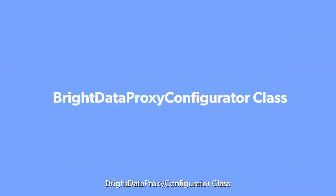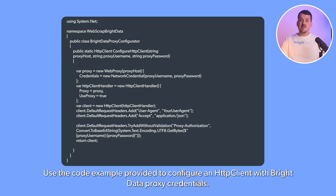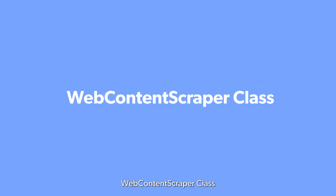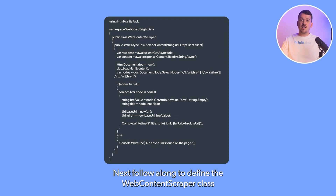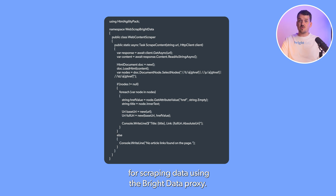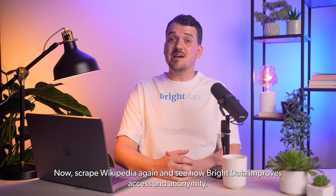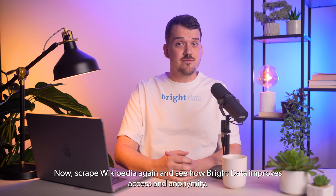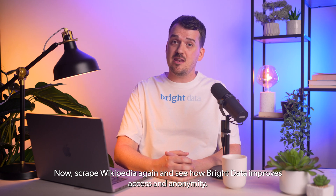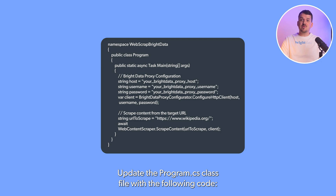Bright Data Proxy Configurator class. Use the code example provided to configure the HTTP client with Bright Data proxy credentials. Next, follow along to define the WebContentScraper class for scraping data using the Bright Data proxy. Now scrape Wikipedia again and see how Bright Data improves access and anonymity. Update the program.cs class file with the following code.